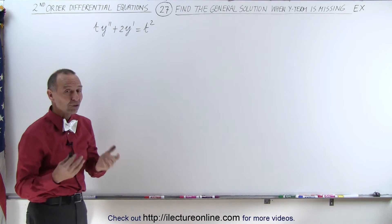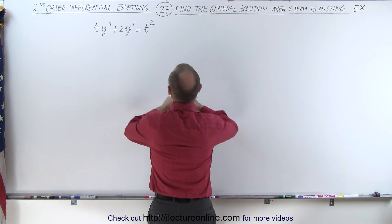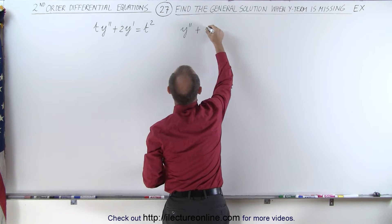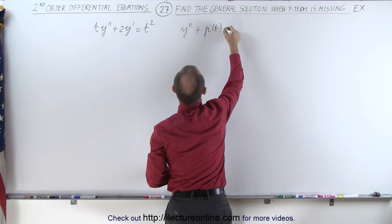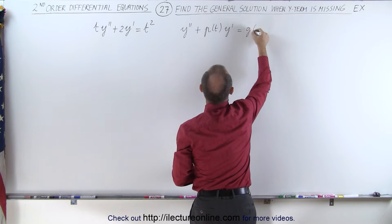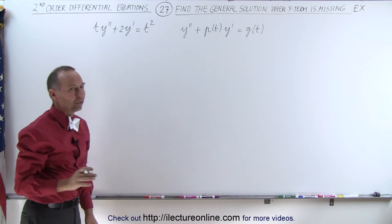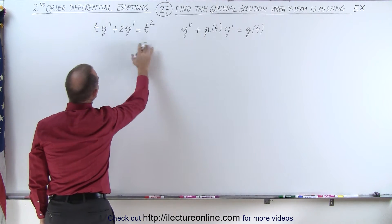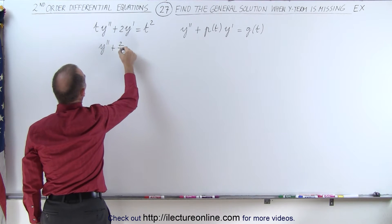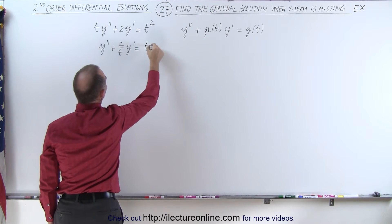So how do we solve a problem like this? Well, first of all we want to put this into a general format. The general format would look as follows: y double prime plus some function of t times y prime. The y term is missing, and so this is equal to some other function of t — let's call it g of t. To do that we're going to first divide everything by t. We now have y double prime plus 2 over t times y prime is equal to t squared divided by t, which is simply t.